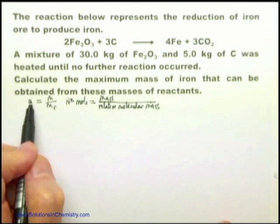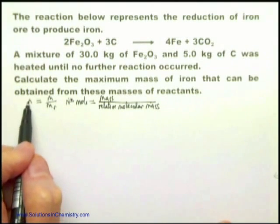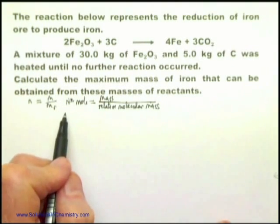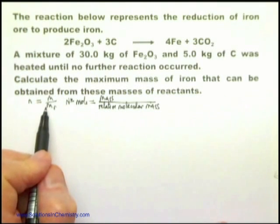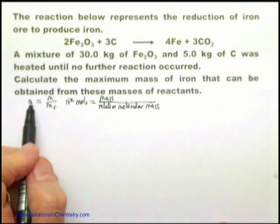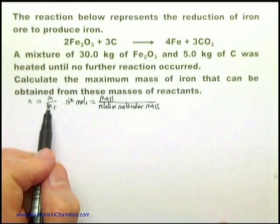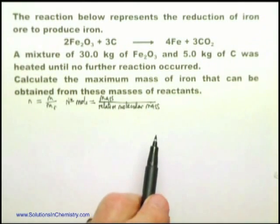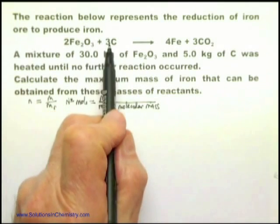Write this down. It may be worth one mark just writing it down, because the next stage you may make a mistake, and so the examiner goes back and says you knew what you wanted to do, so we'll give you the mark for at least knowing what you wanted to do, even if you made a mistake in the calculation.